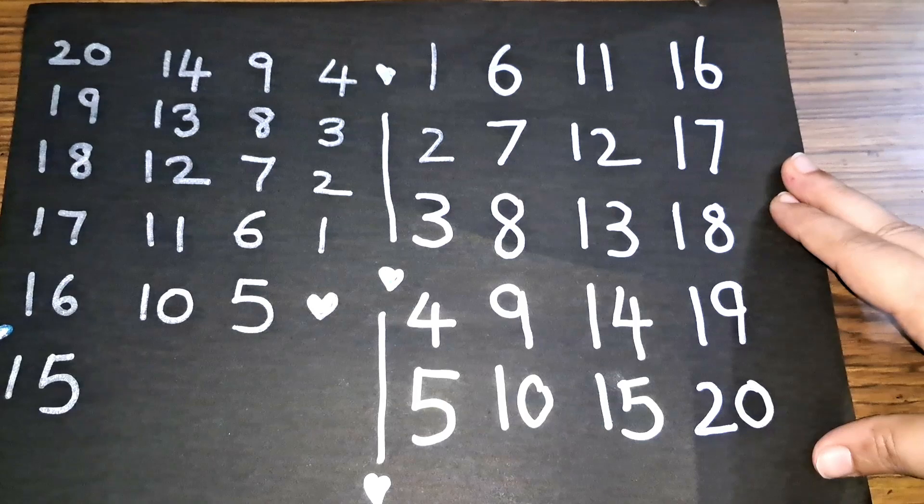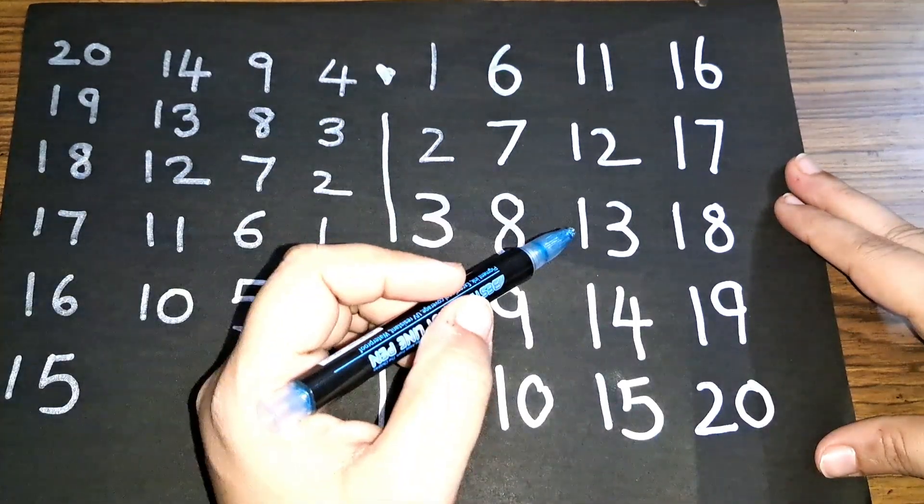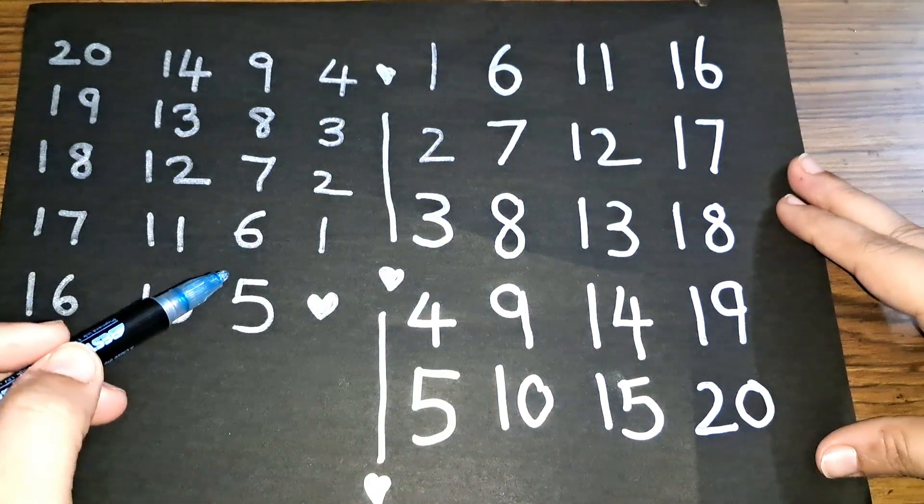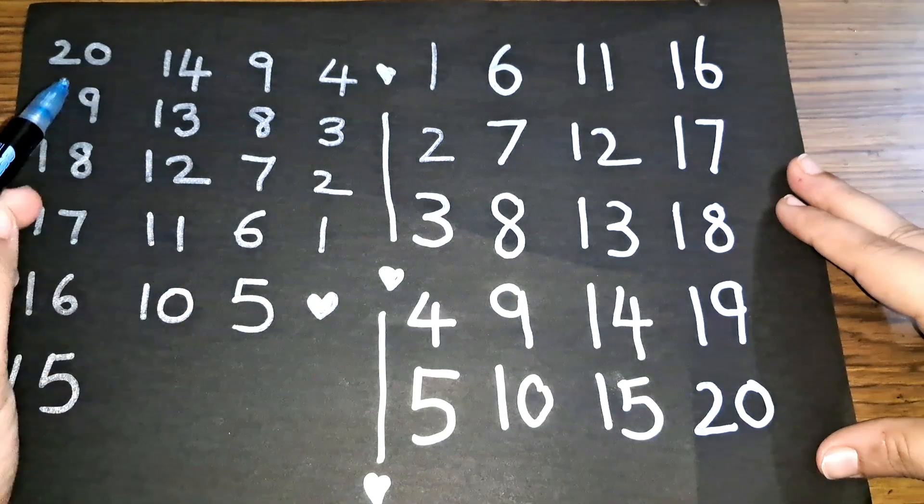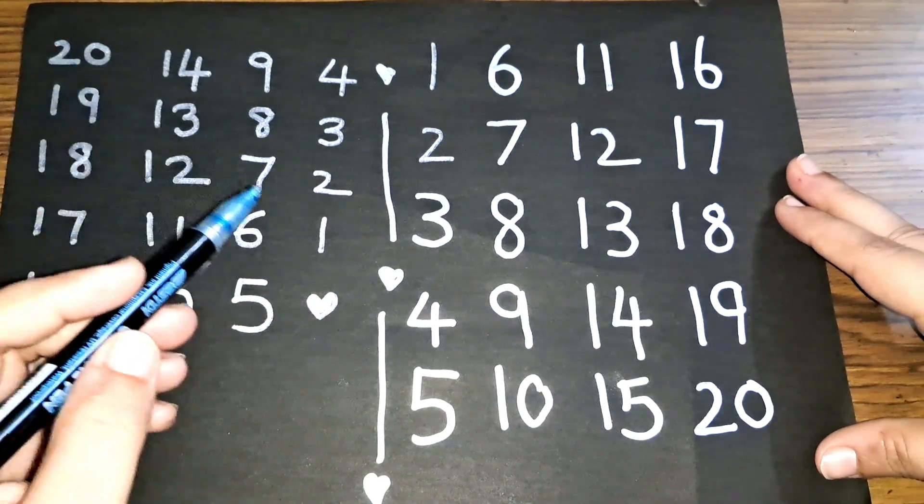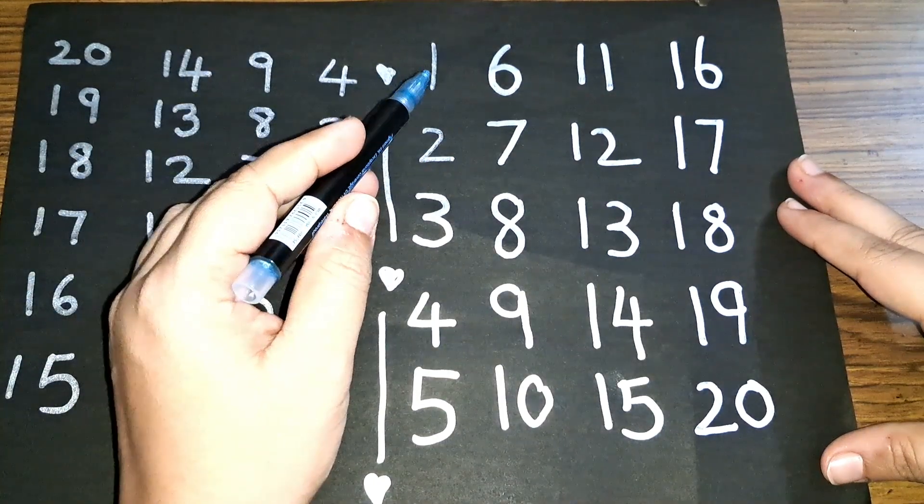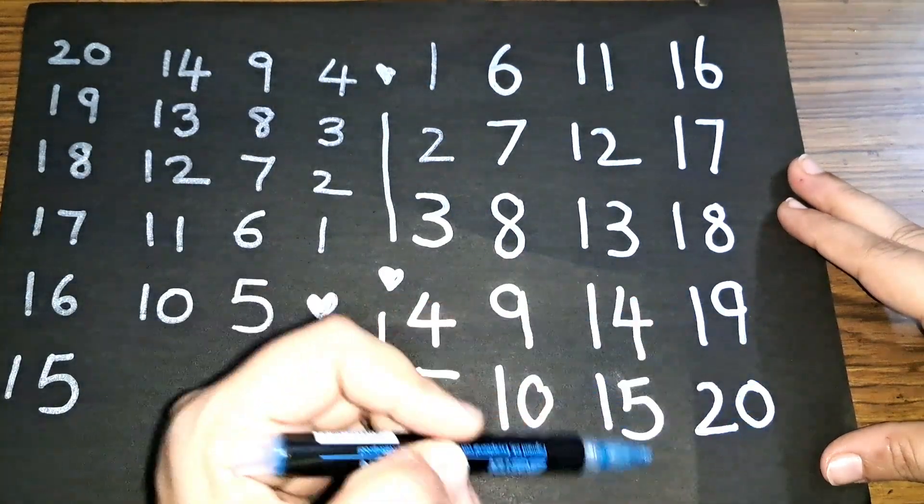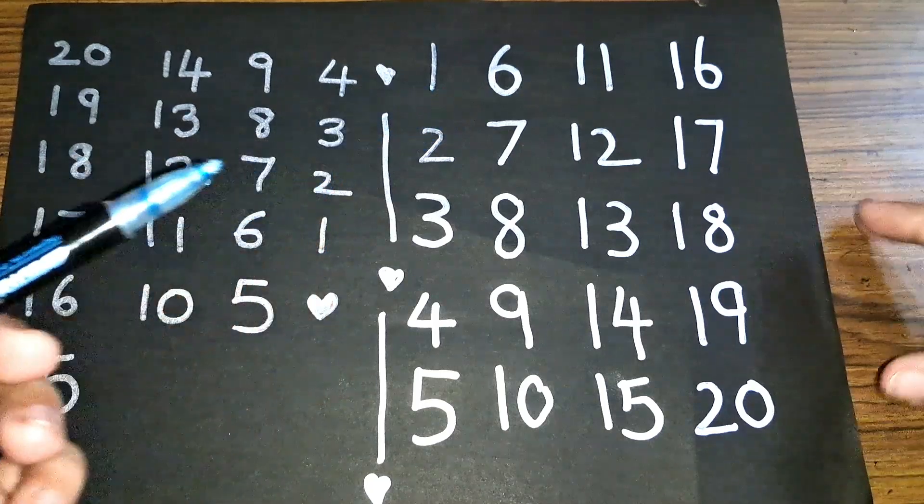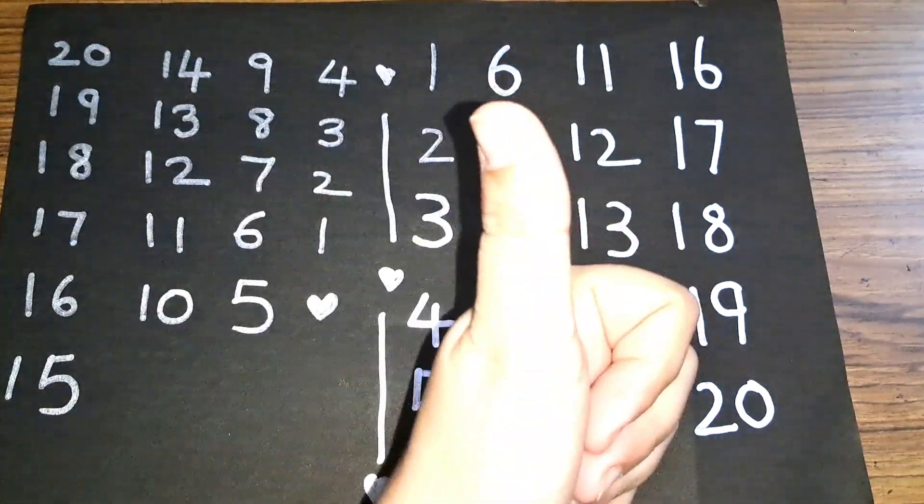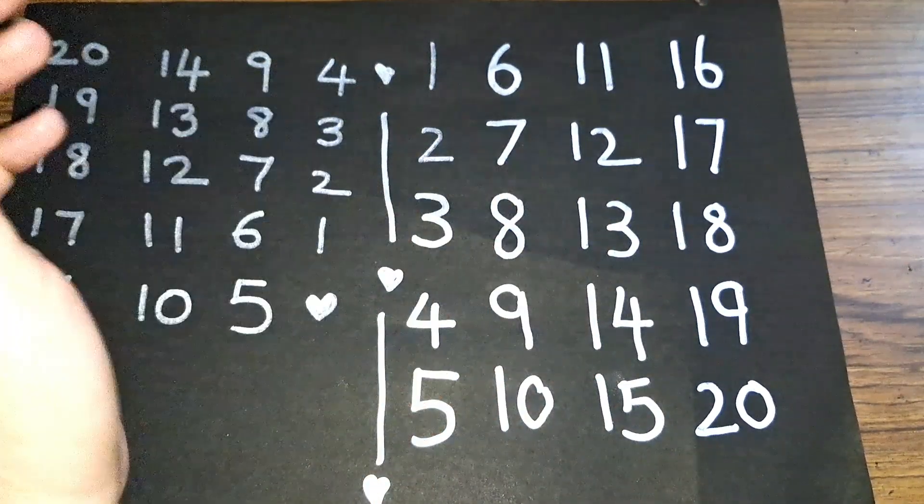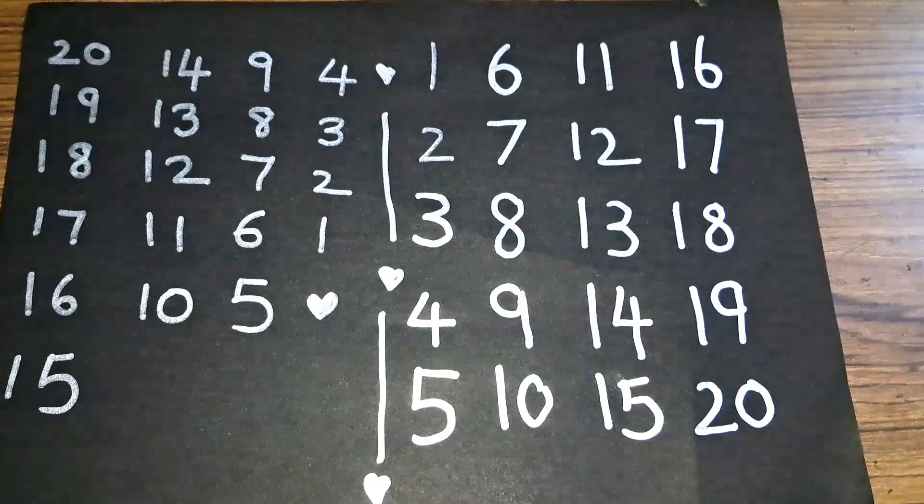And this one is backward counting. Forward counting, backward counting. When you go from 20 to 1, that is backward counting. When you count from 1 to 20, that is forward counting. Don't forget to like and subscribe. Bye, see you later.